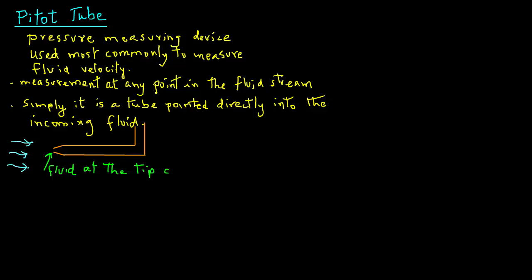Now, when the fluid approaches the tip of the tube, since the tube is filled with the fluid, it cannot enter the tube, so that the velocity of the fluid at the tip will be zero, and we call it stagnant.